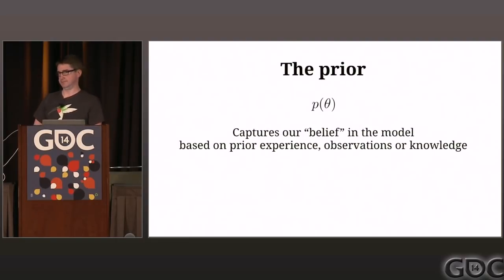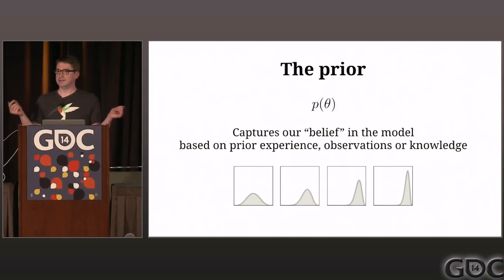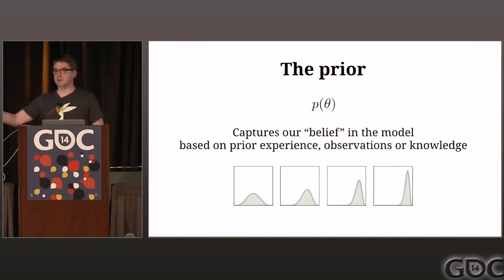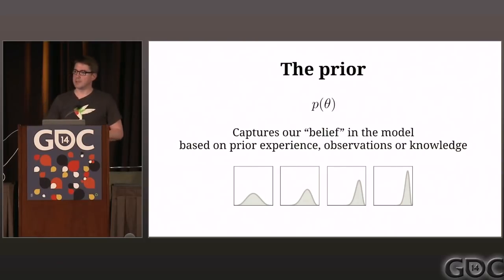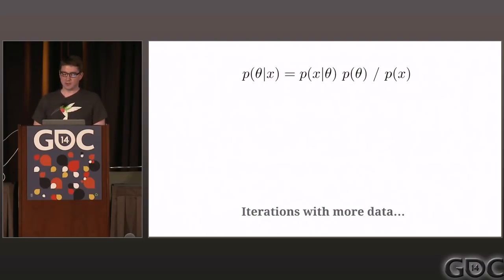The prior captures our belief in the model — how strongly do we think our prior experience is right? For our coin, we might think it's pretty fair, so theta is likely 0.5, but we allow for the fact we haven't seen it manufactured, haven't measured or weighed it. Or we might decide a magician has been using it on stage and it's clearly been doctored, so we'd model that with a distribution skewed to the right — more likely it'll come up heads. You can encode that straightforwardly into the prior — it's just a distribution that needs to sum to one. In Bayesian we plug all that together and iterate based on data toward an understanding of how good the model is.